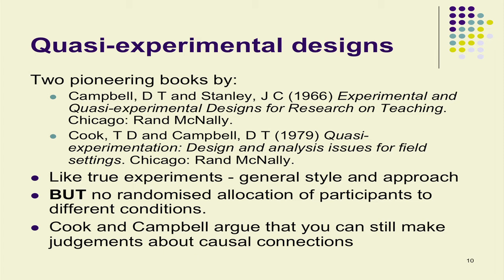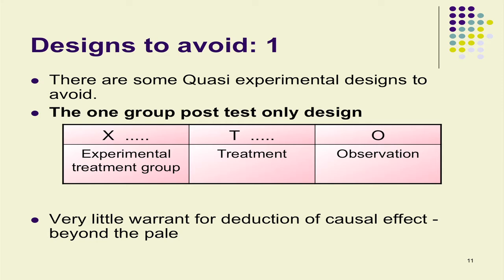The first category is designs to avoid — ones Cook and Campbell suggest we should avoid under any circumstances. These are not experiments, not even proper quasi-experiments; they're just too dangerous in that there's too much chance we'll make false deductions about what's causing effects. Here is what they call the one-group post-test-only design. You have one group, no control. We do something to them — give them some kind of teaching, put them in a loud noise, give them some Mozart — and then we observe what happens.